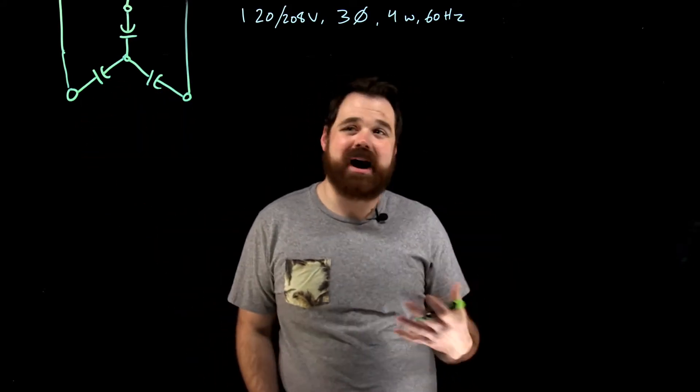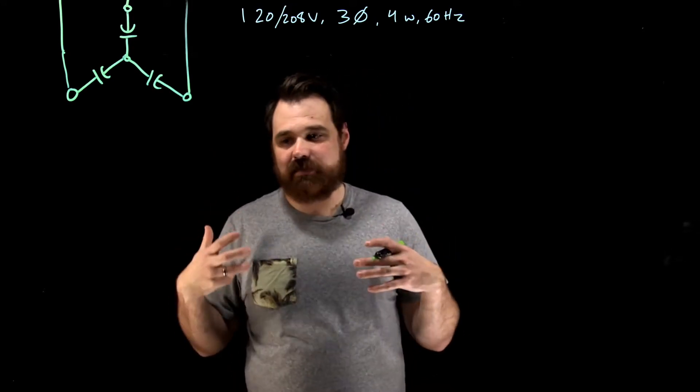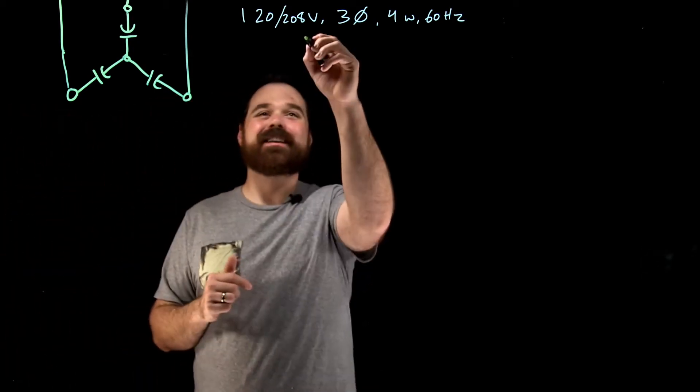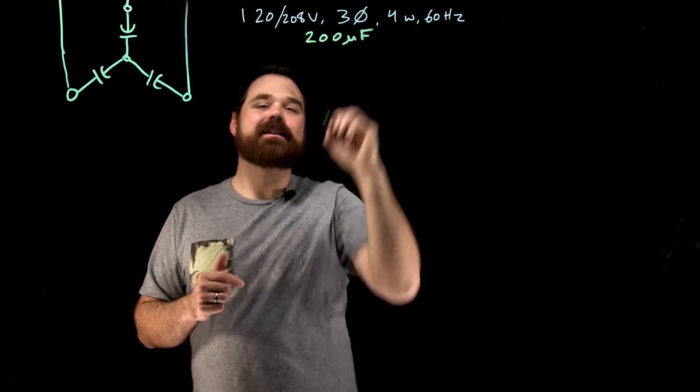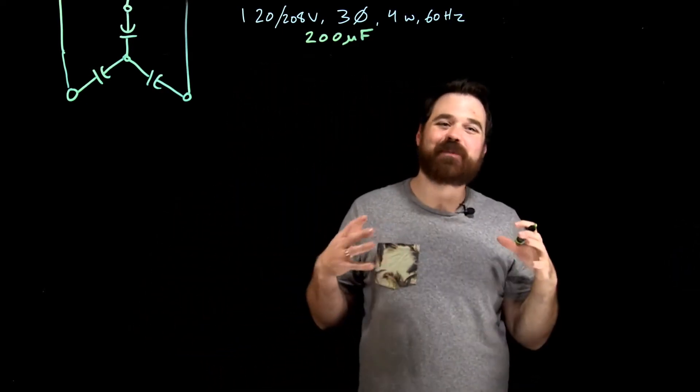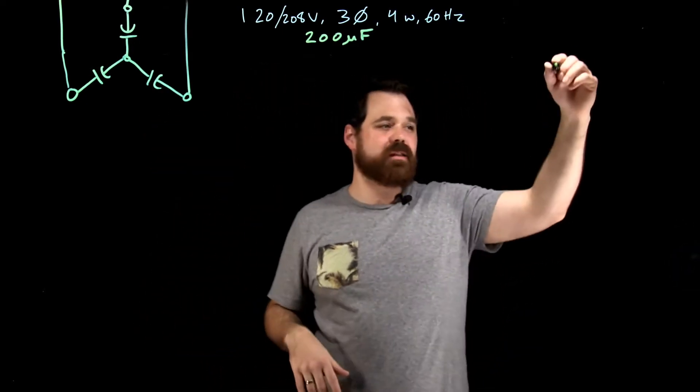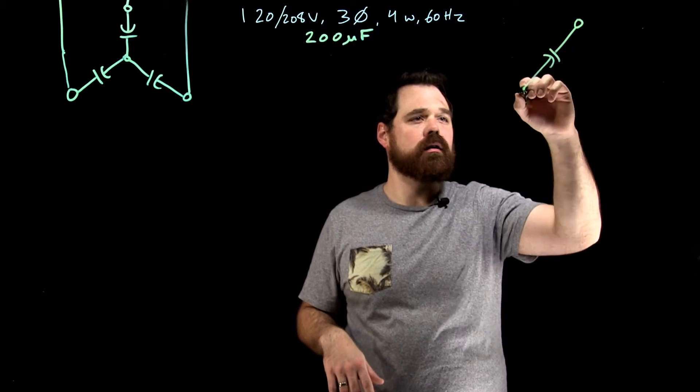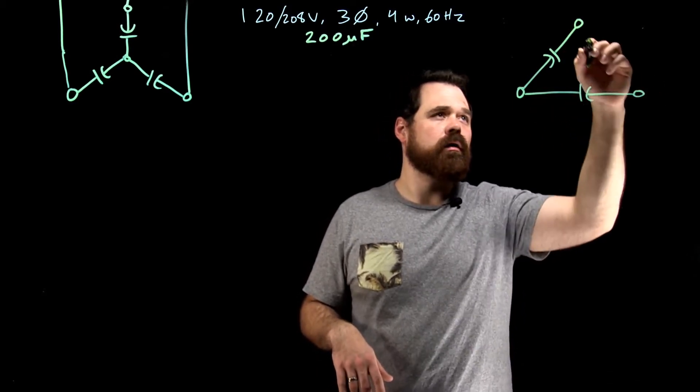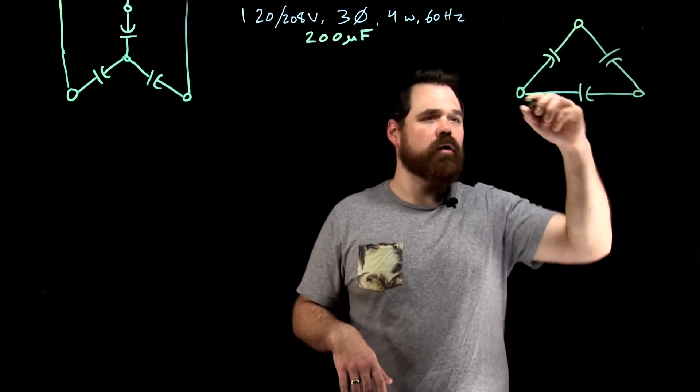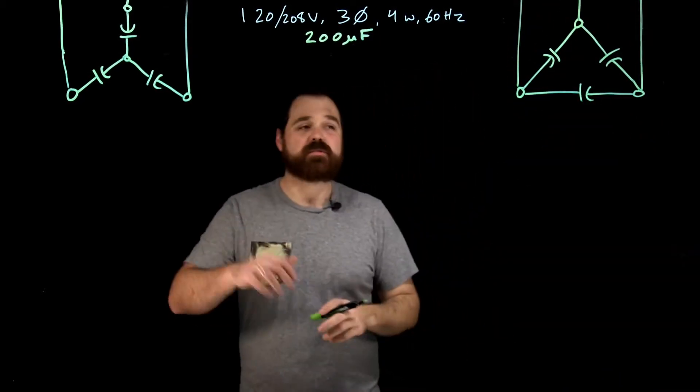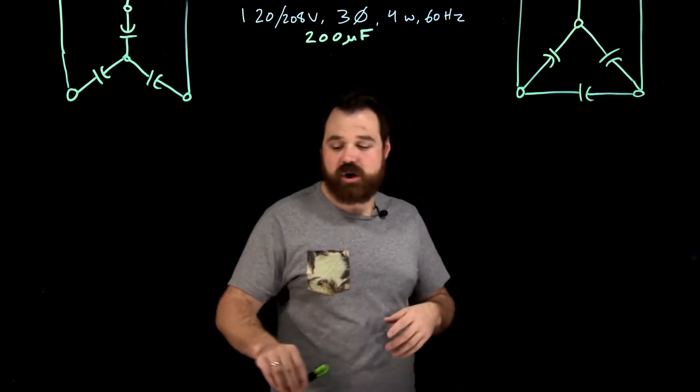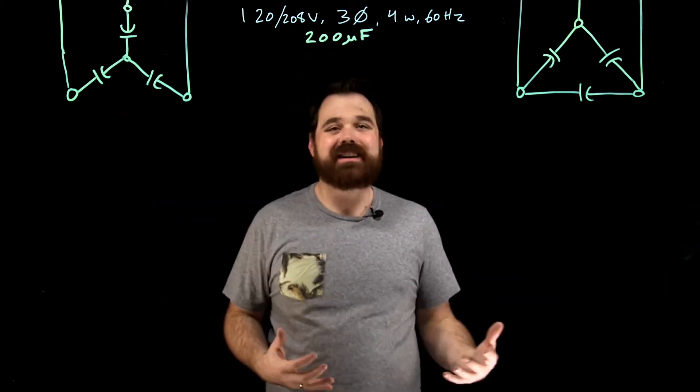And again, this video here, we're talking about a balanced load. So we're saying they're all the same size. We're going to say they're all 200 microfarad capacitors. So we got, connect them up in Y, or we connect them up in delta. So in delta, they would look something more like that, and connect them up to our... yes, we have a 120-208 three-phase four-wire source. But because we're a three-phase balanced load, even on our Y, we don't need that neutral connection.